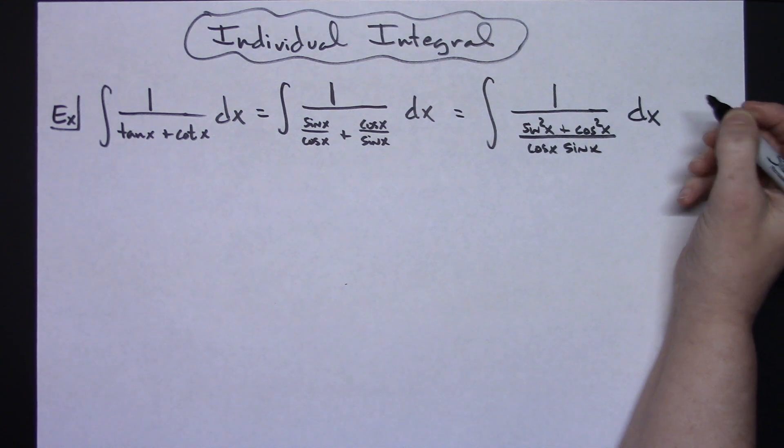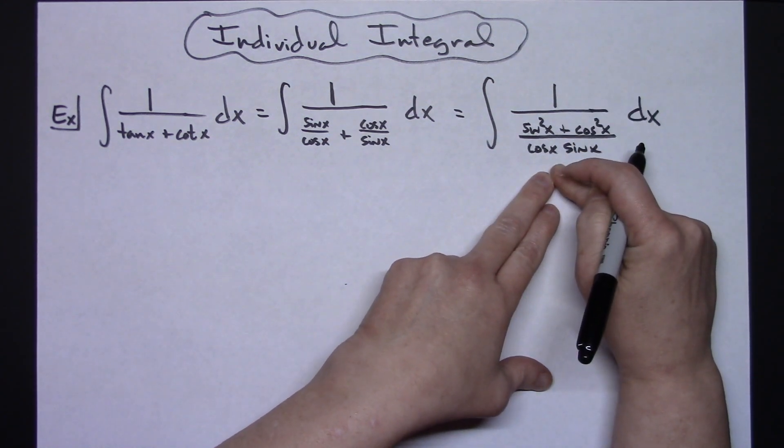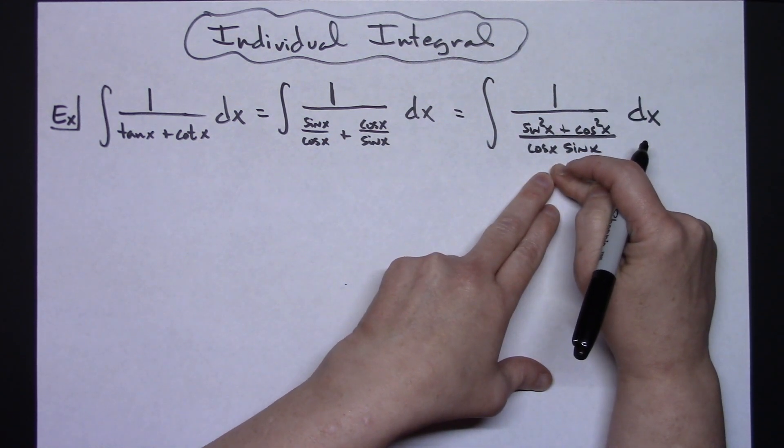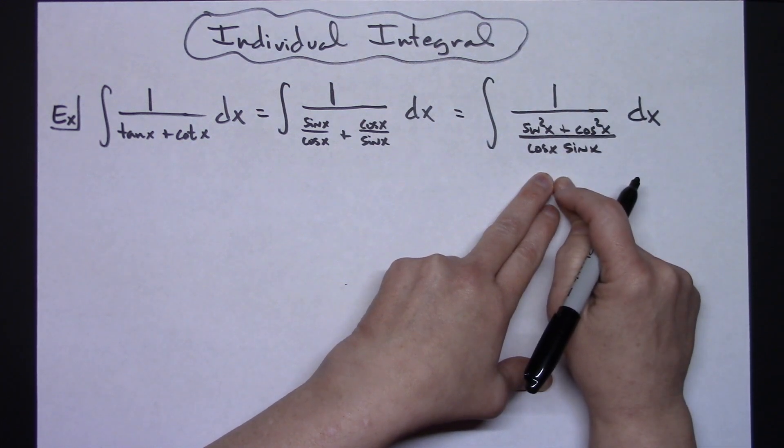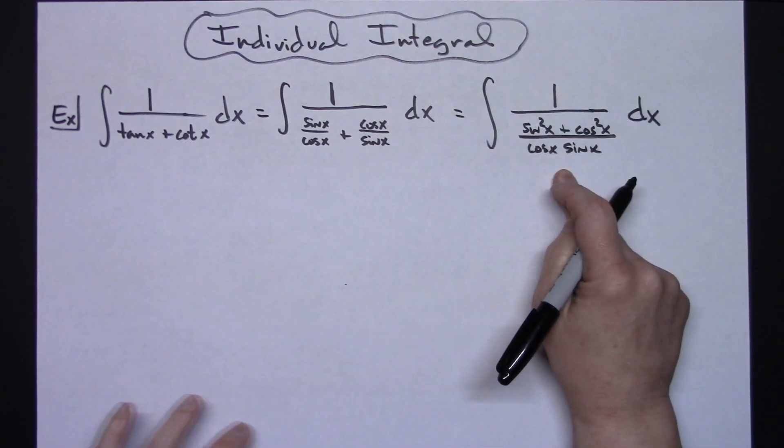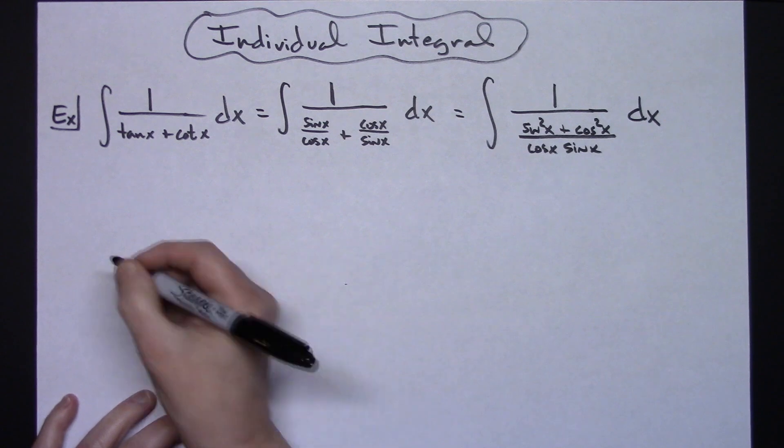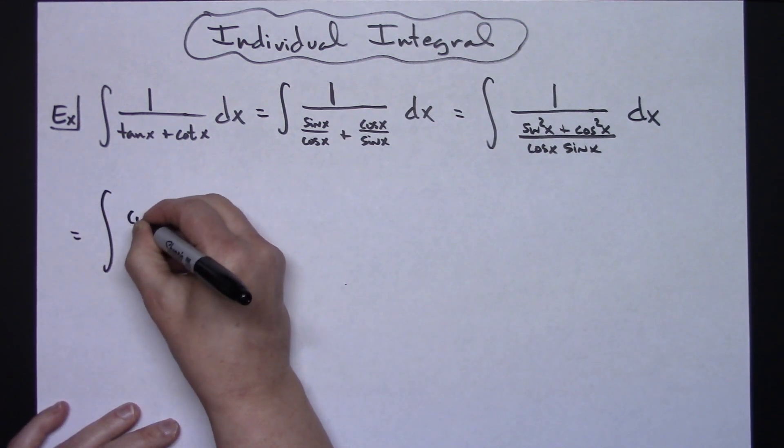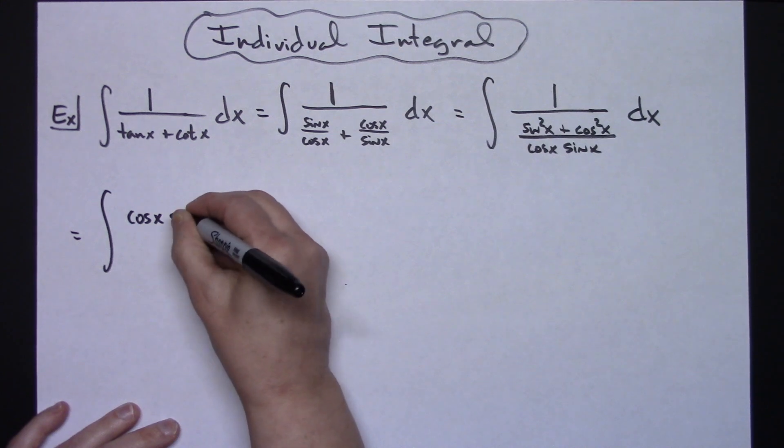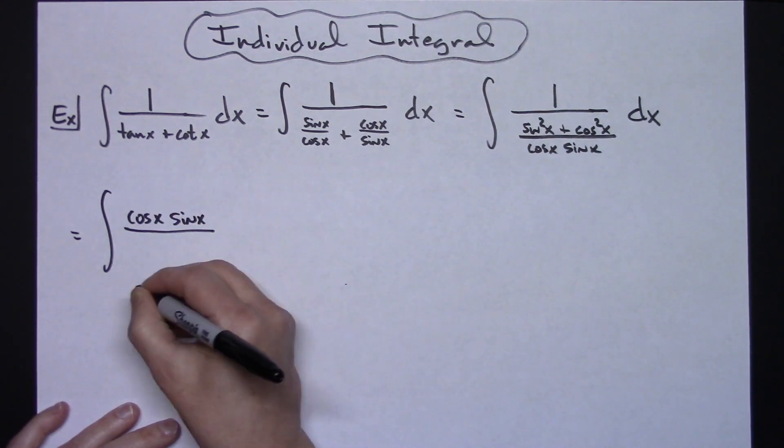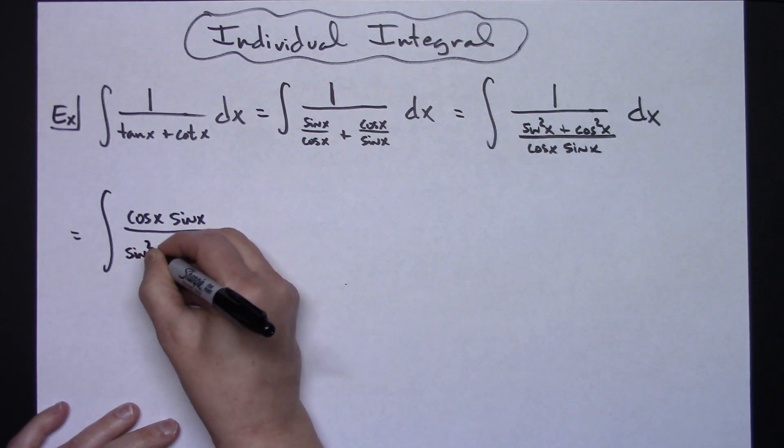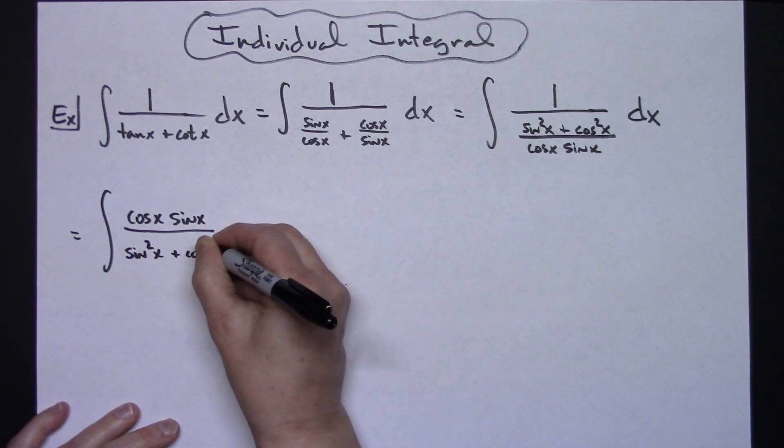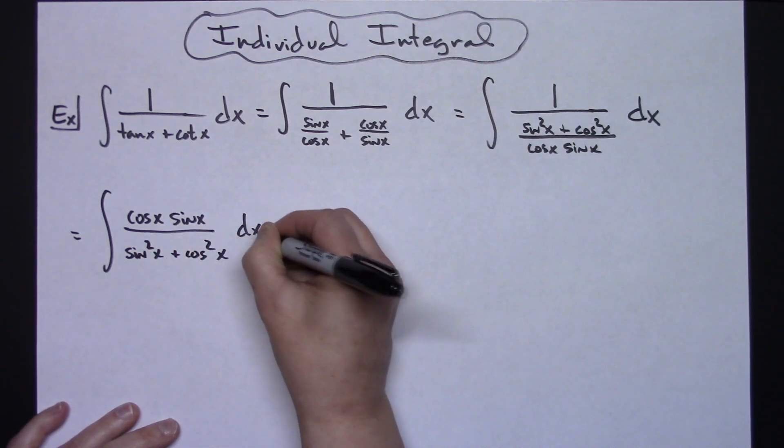Alright now from there this is a complex fraction, so I multiply through by my least common denominator and get rid of that complex fraction. So we'll have the integral of cosine x sine x in the numerator and then in the denominator we will have sine squared x plus cosine squared x dx.